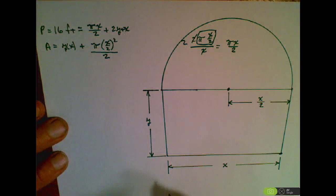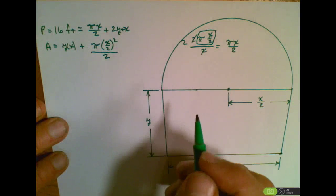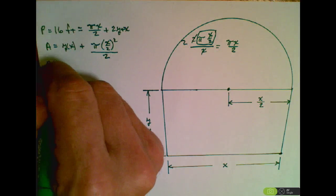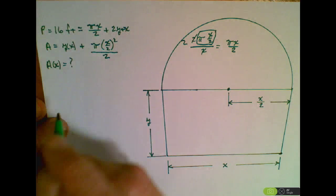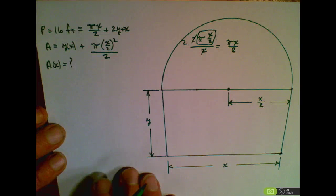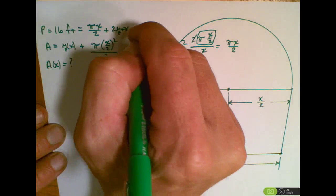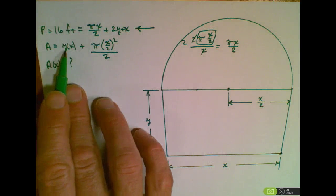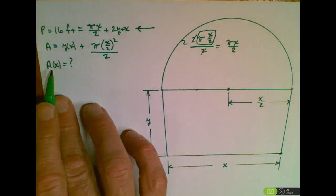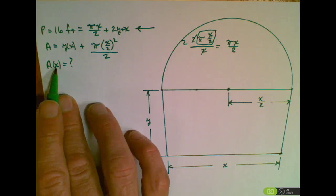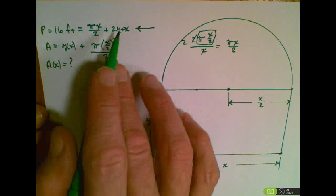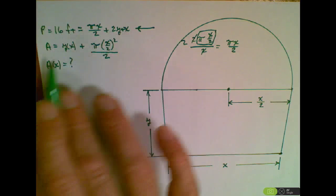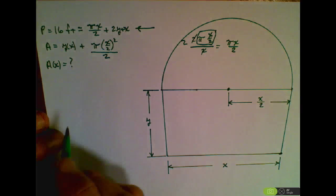Our problem asks us to find area as a sole function of x. That is what we're looking for. So what would be prudent is to take a look at this first equation. We can get rid of this y in the area equation by substituting what we get for y from the perimeter equation, and then putting that into the area equation.